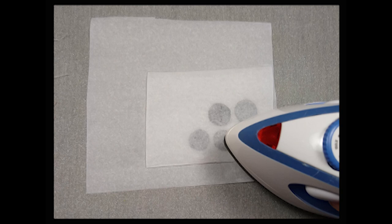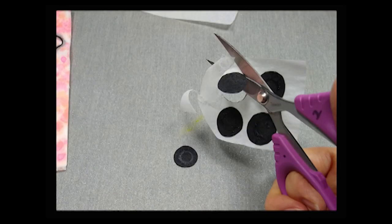Using a hot dry iron, I will press so that the adhesive is well adhered to the back of the circles, and then I'm going to cut them out.